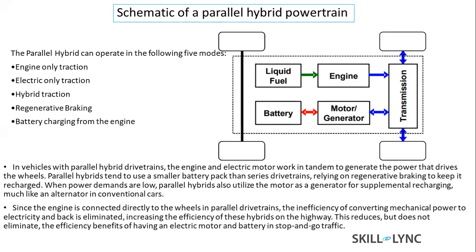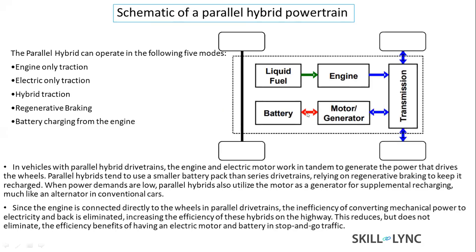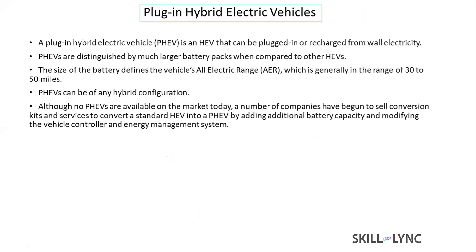In the parallel hybrid powertrain, liquid fuel powers the engine, which delivers power to the wheels on one path. Simultaneously, the battery powers the motor, which generates mechanical power delivered to the transmission and wheels. These two paths are coupled in parallel — hence the name parallel hybrid. Some configurations combine both series and parallel architectures, where a motor-generator coupled through a gear set allows the engine to recharge the battery as well.